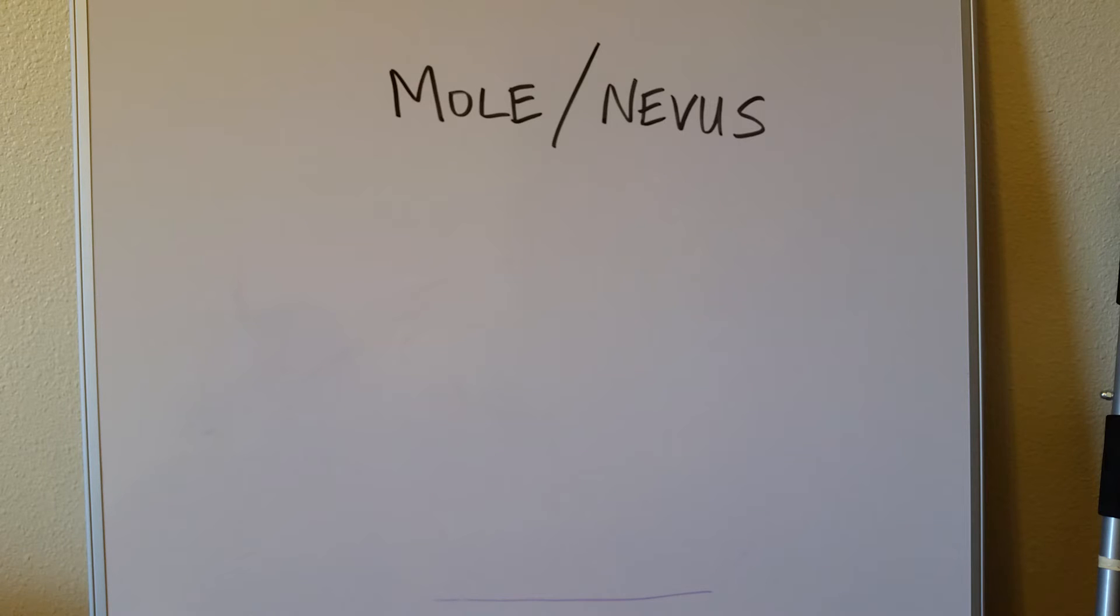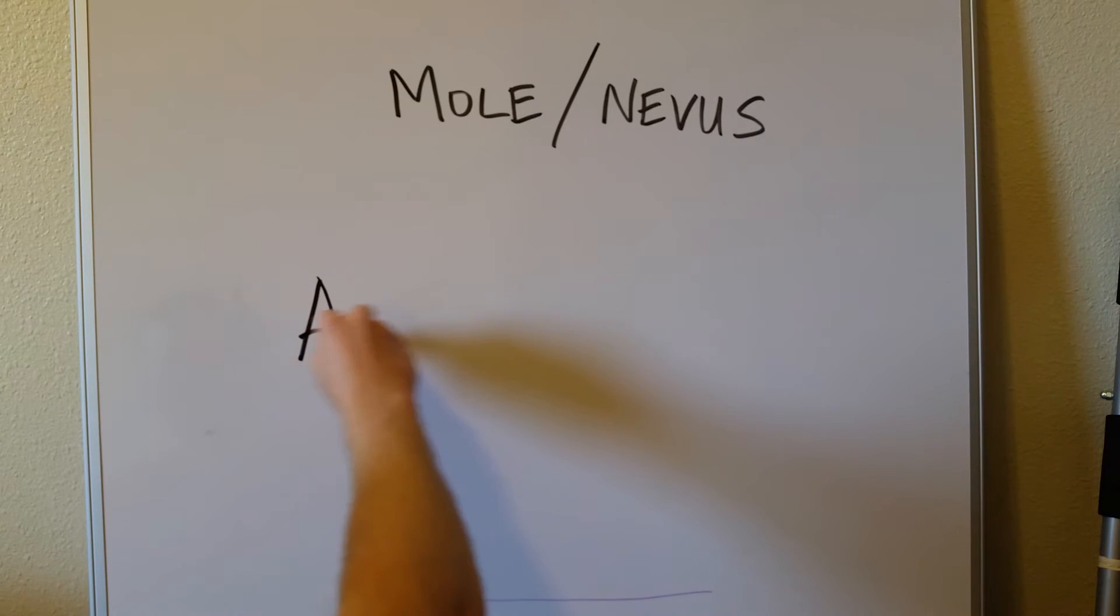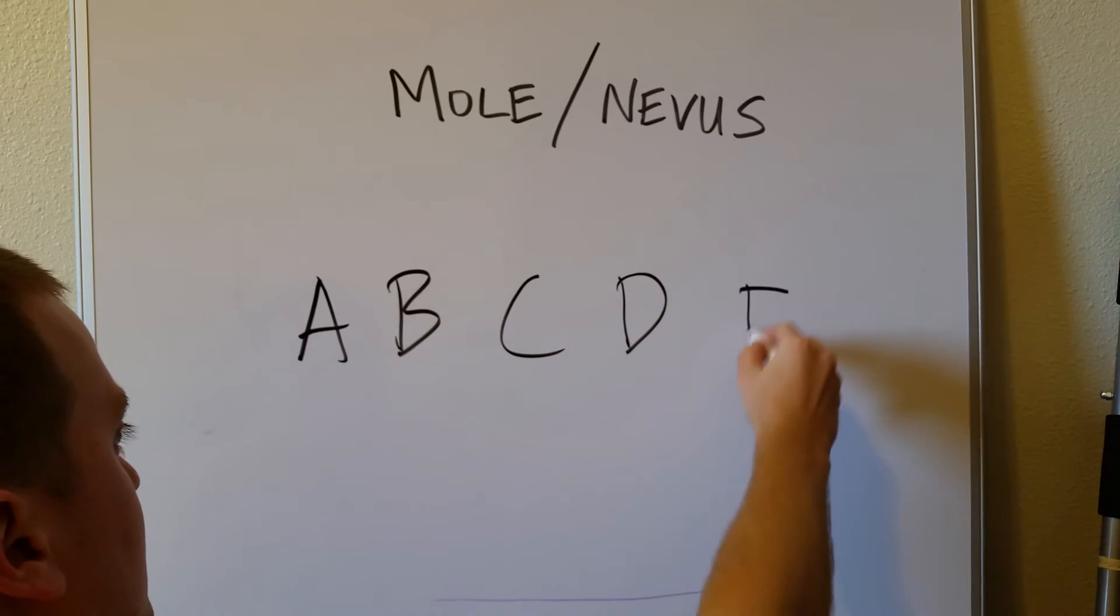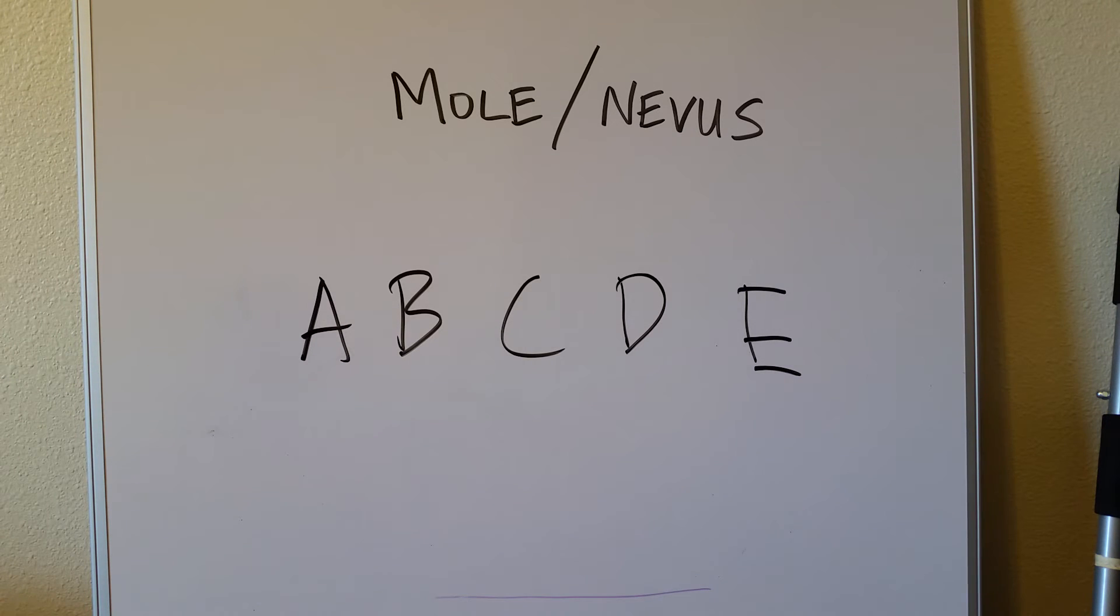But so now onto the real reason you're here, a simple way to determine if the mole or the lesion on your skin is melanoma, right? And it's as easy as A, B, C, D, E. We love mnemonics here at Med School Made Easy. So the first one, A, asymmetry.